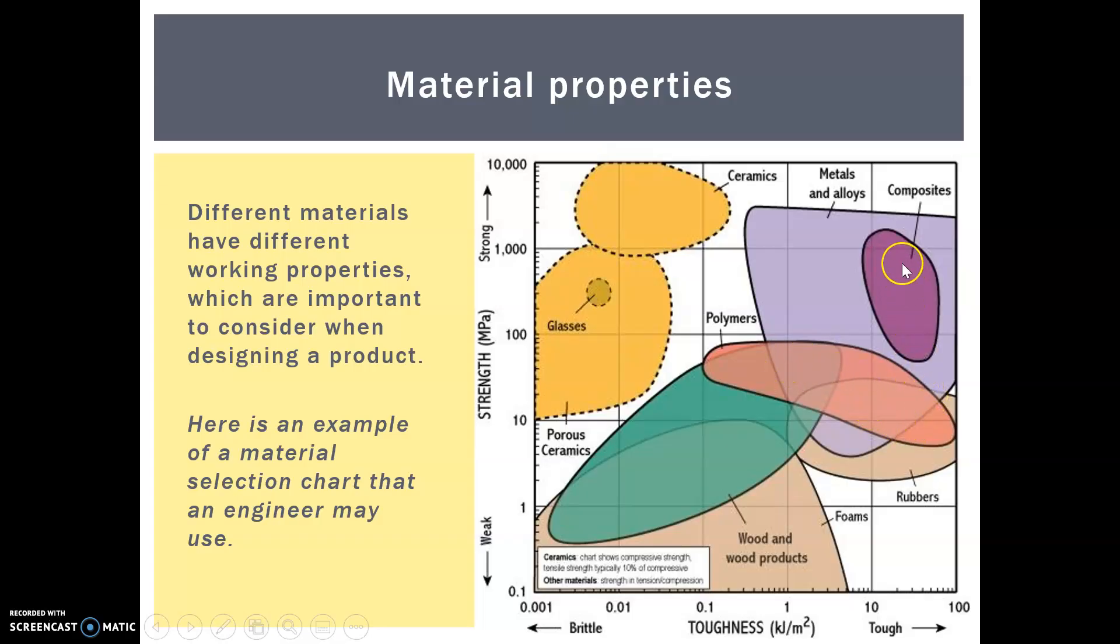Whereas composites are very tough and very strong. So you can see how that works. They will actually use this to make decisions about what materials to use for their product.